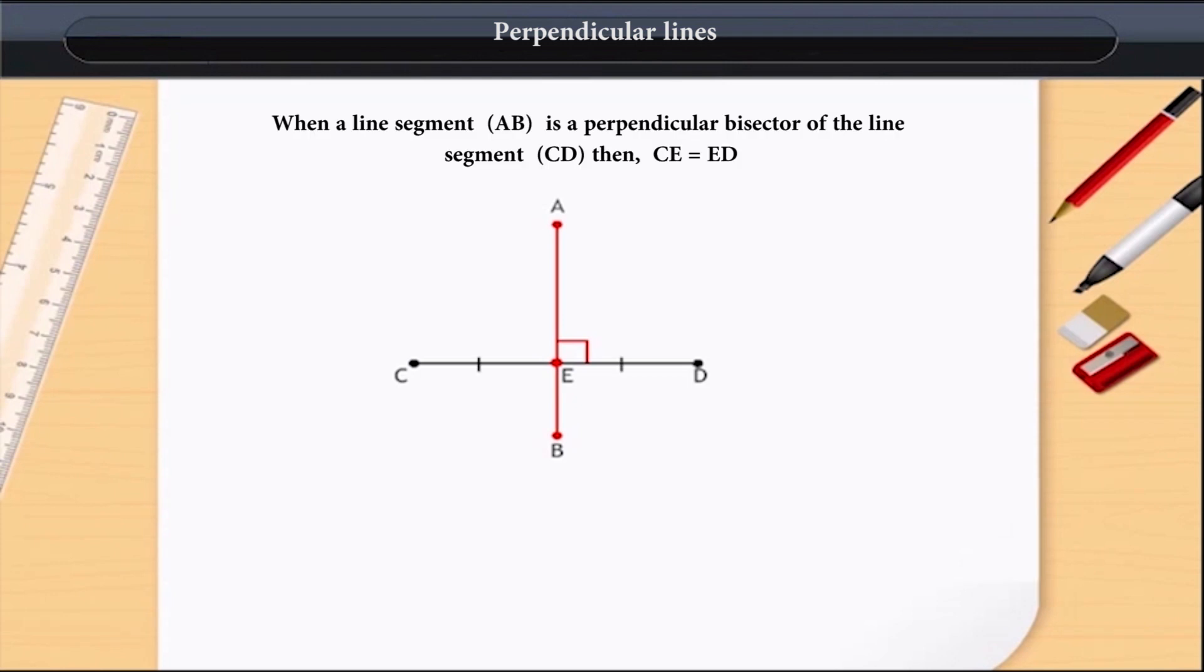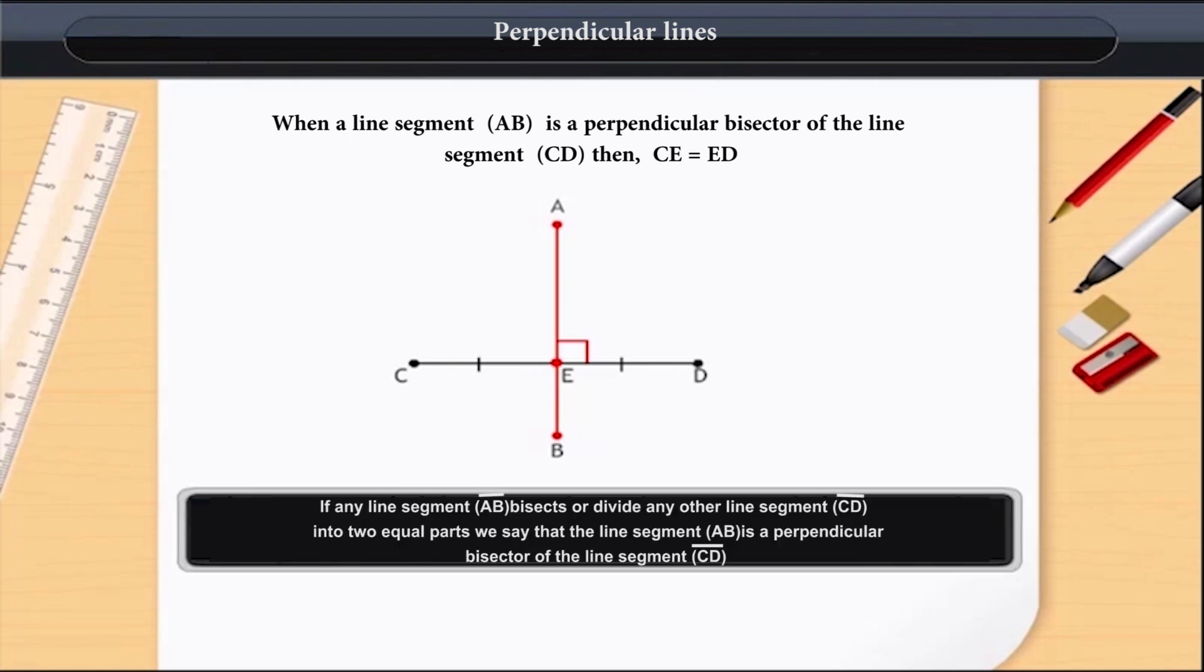And the line segment AB should pass through the center point E of the line segment CD. This line segment AB bisects or equally divides the line segment CD into two equal parts at its center point E, which is the midpoint of line segment CD. Therefore, we call this line segment AB a perpendicular bisector of line segment CD.